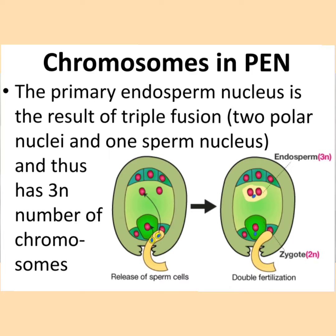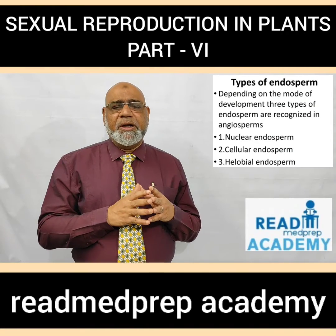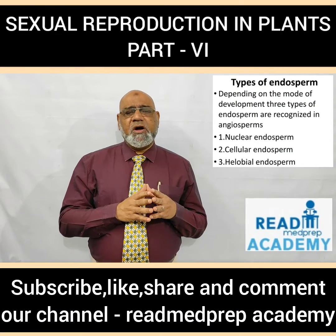Endosperm is a nutritive tissue and regulatory structure that nourishes the developing embryo. In the image you can see the embryo in the center surrounded by the endosperm tissue, which slowly enlarges around the embryo and gives nutrition to the growing embryo. Depending upon the mode of development, three types of endosperm are recognized in angiosperms: nuclear endosperm, cellular endosperm, and helobial endosperm.